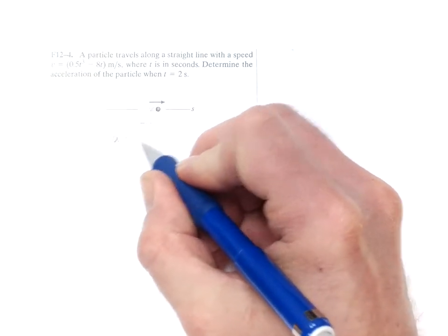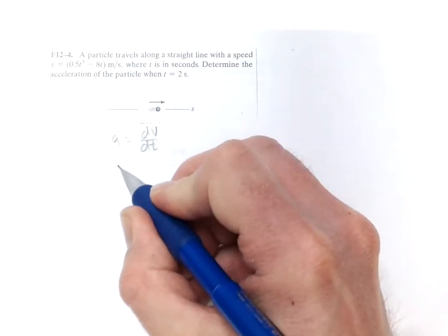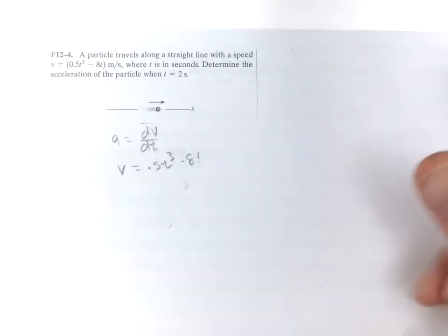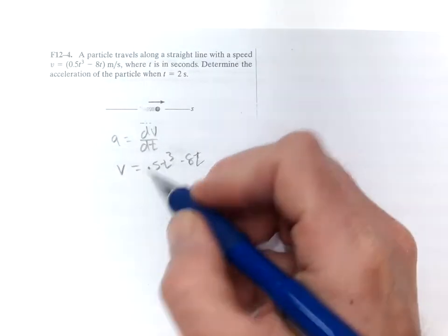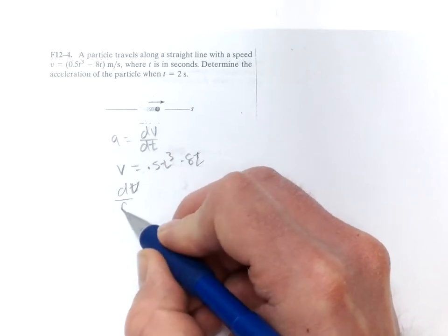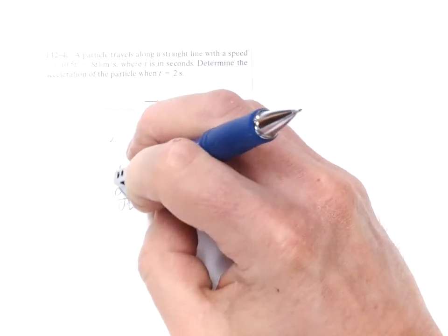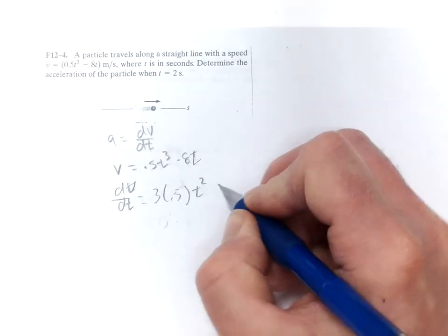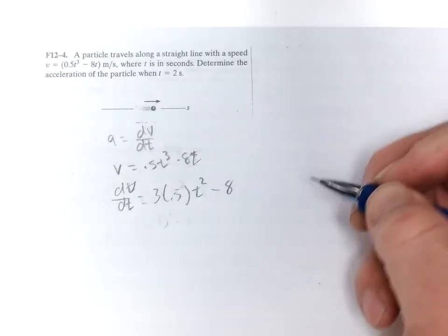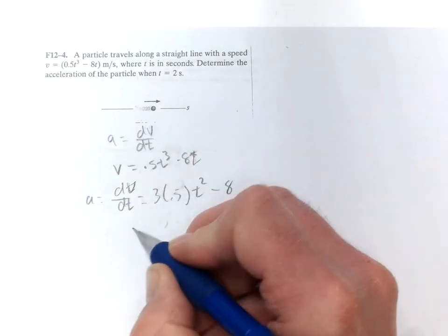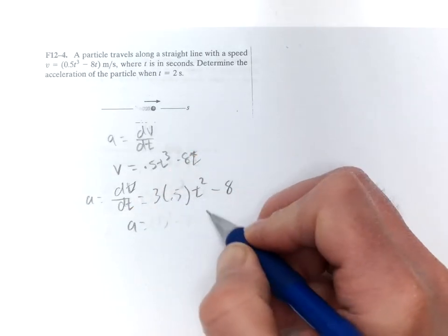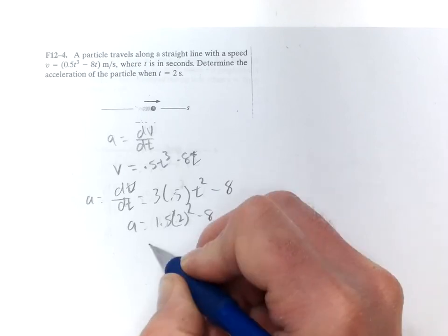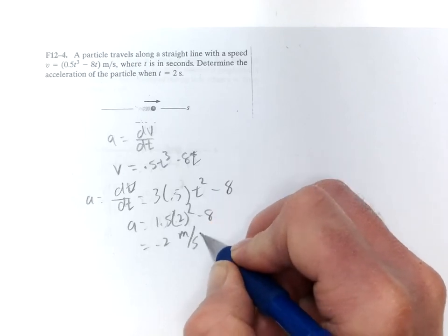So let's start out with a equals dv dt. So v equals 0.5t to the third minus 8t and dv dt equals 3 times 0.5t squared minus 8. And that is a. So a at t equals 2 is going to be 1.5 times 2 squared minus 8, which is negative 2 meters per second squared. All right. Thank you.